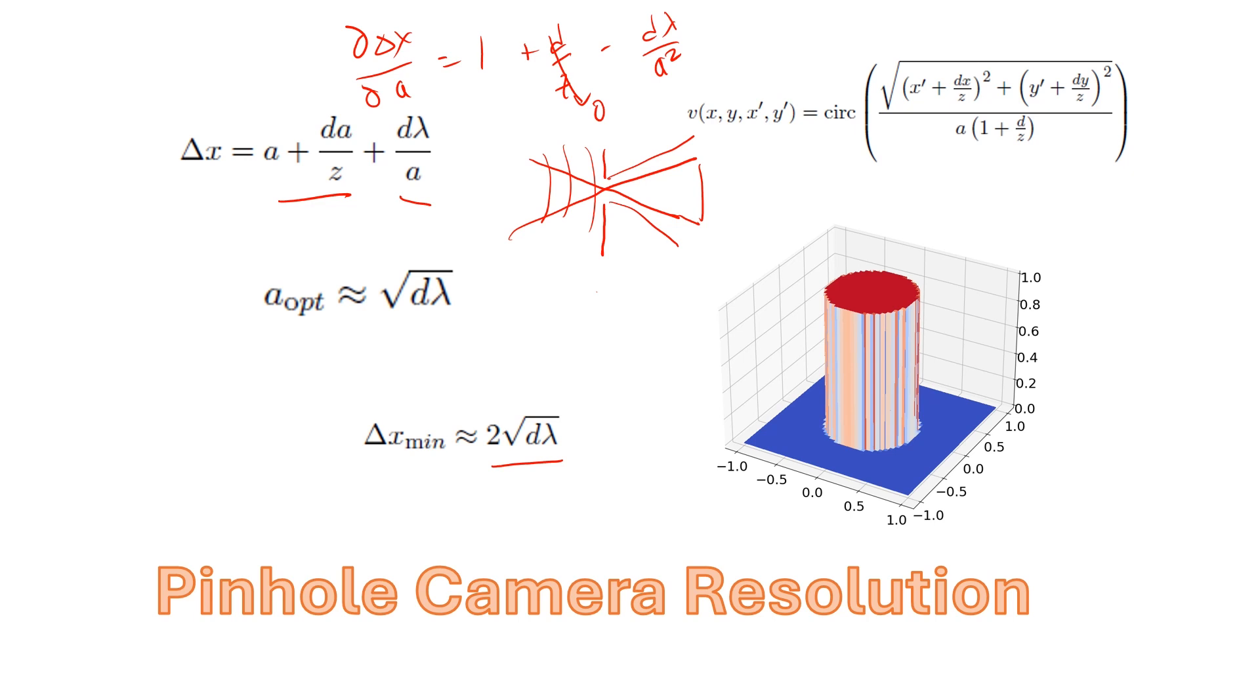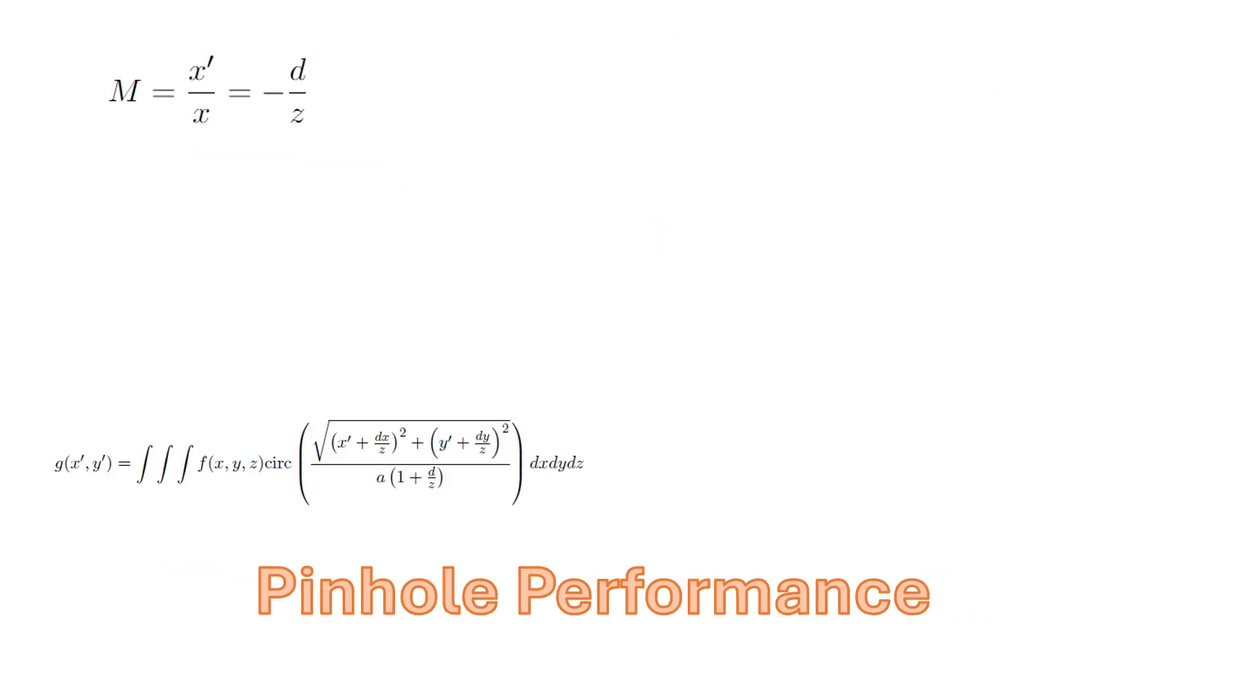So this gives us an idea of the forward model of the pinhole and what its performance is going to be as an imaging system. Now, if we look at this forward model, there's the scale difference between the image space scale, which is in space X', and the object space, which is multiplied by D over Z. So D minus D over Z is the magnification of the image. The image is inverted relative to the object and scaled by D over Z.